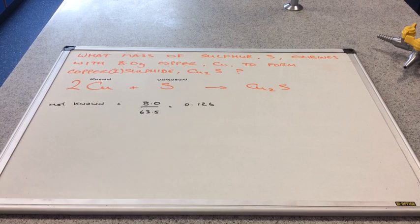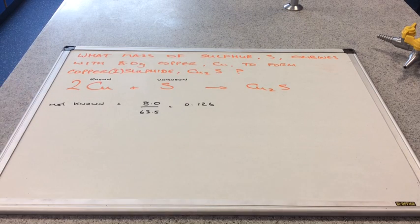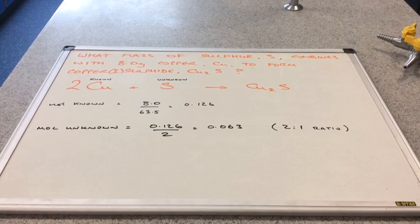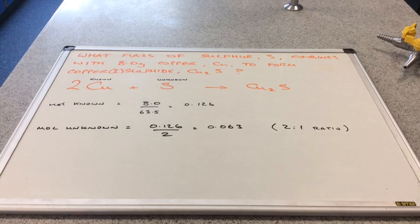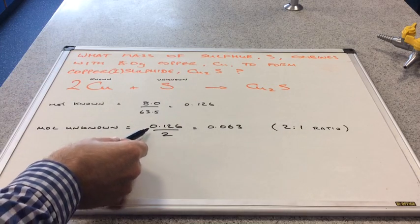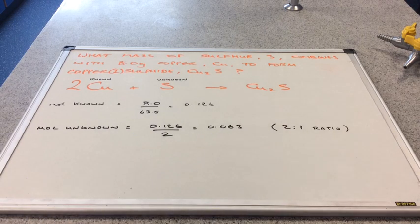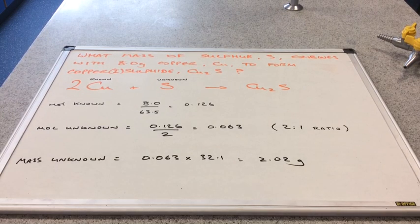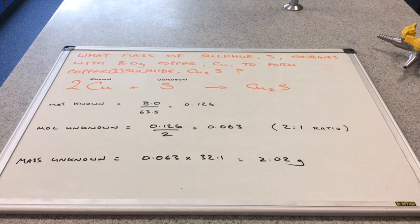The moles of copper is the mass divided by the MR, which comes out at 0.126. The equation tells us that for every 2 moles of copper, only 1 mole of sulphur is needed — a 2 to 1 ratio. So we divide the moles of the known substance by 2, giving us 0.063 moles of sulphur. Converting that to a mass: 0.063 times the MR of sulphur (32.1) gives, to three significant figures, 2.02 grams.